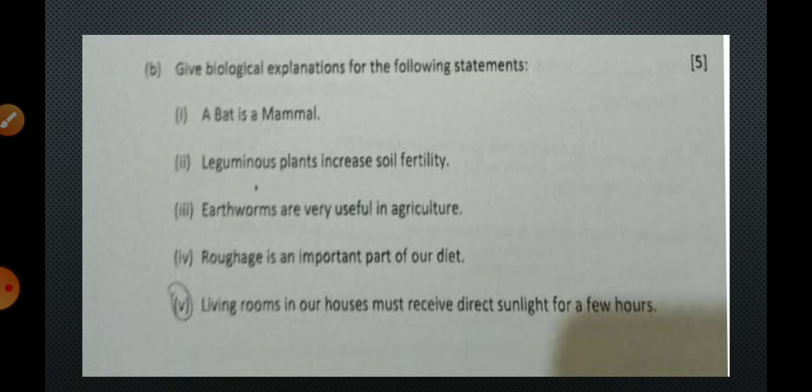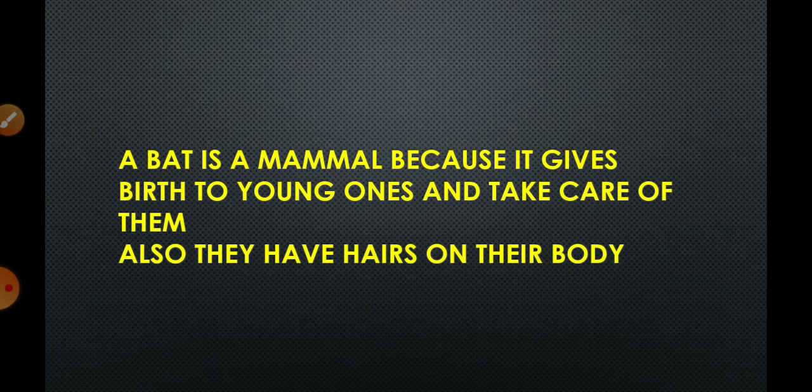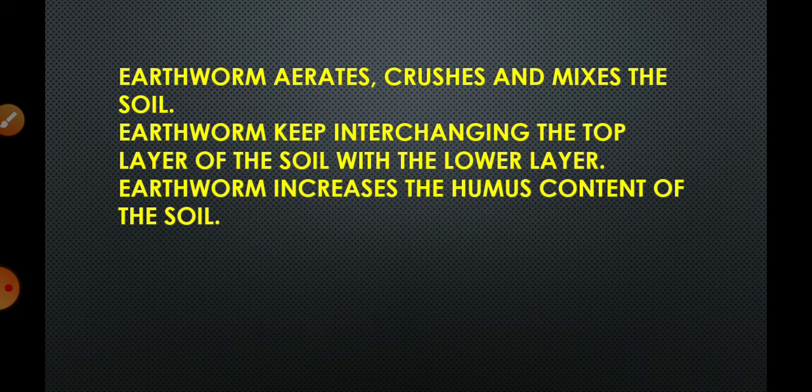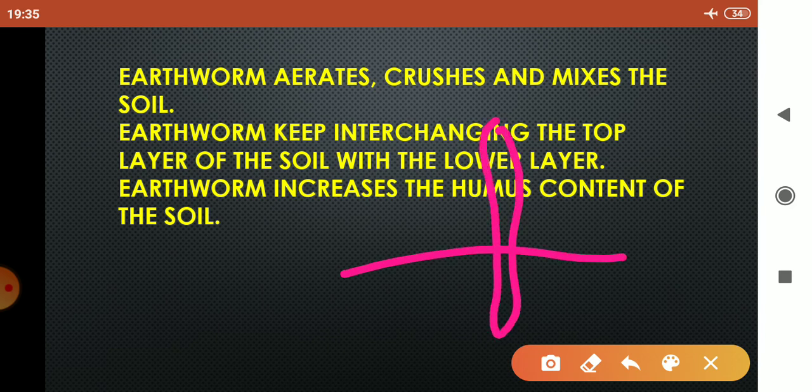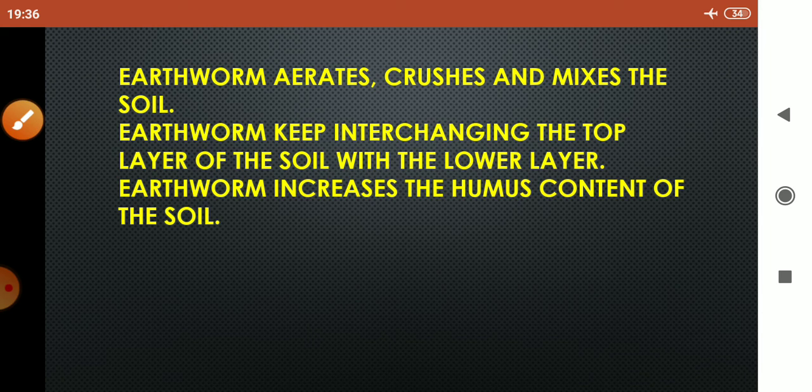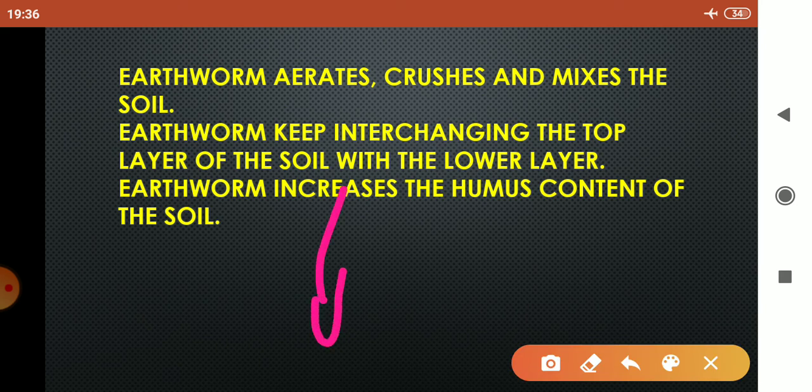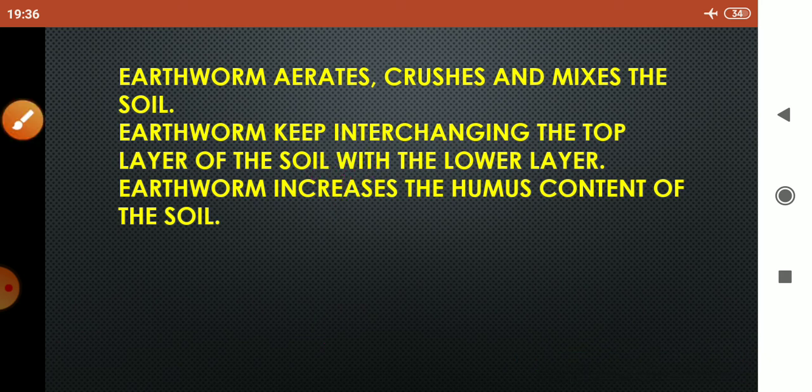Earthworms are very useful in agriculture. The answer is earthworm aerates, crushes and mixes in the soil. Earthworm goes deep in the soil, they make a hole in that, therefore oxygen properly enters there. They keep interchanging the top layer of the soil with the lower layer. Along with that, it removes its undigested residue as it moves down. That increases the humus content of the soil, making the soil more and more fertile.